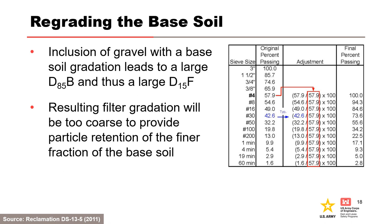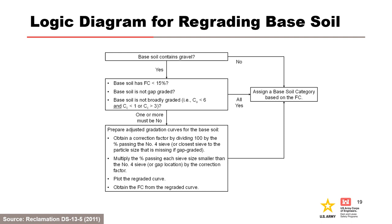Re-grading is performed on the number 4 sieve so that the maximum particle size of the re-graded base soil is 4.75 millimeters. A correction factor is calculated by dividing 100 by the percentage passing the number 4 sieve, and multiplied by the percentage passing of each sieve size smaller than the number 4 sieve, with the new values being the re-graded base soil. When the soil does not contain any gravel or particles larger than the number 4 sieve, re-grading is not required. If the soil does contain gravel but meets all three required properties, re-grading is also not required; if one or more properties are not met, the soil should be re-graded.